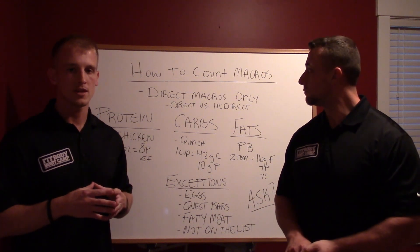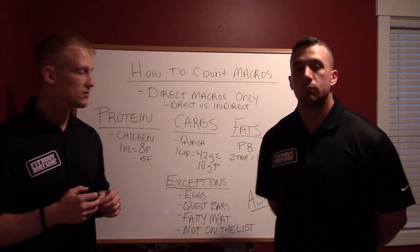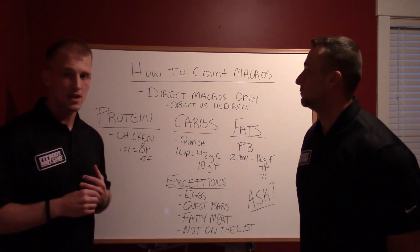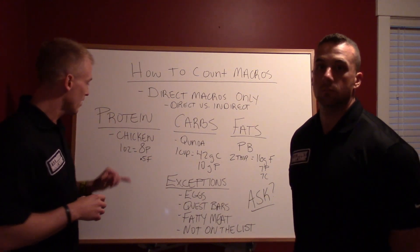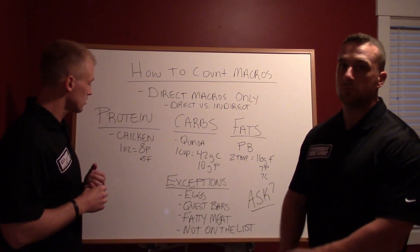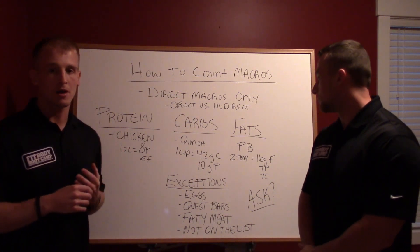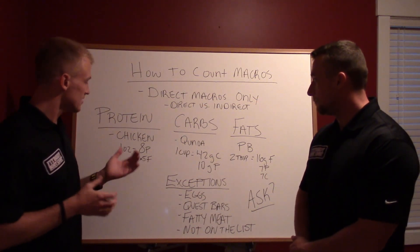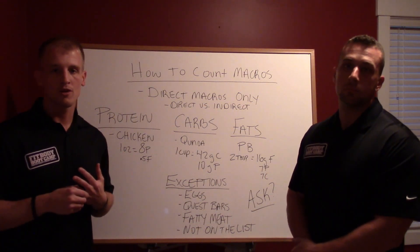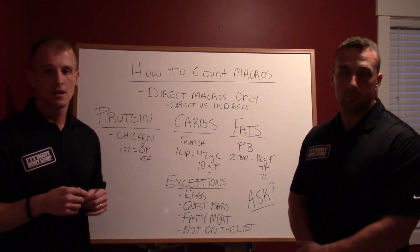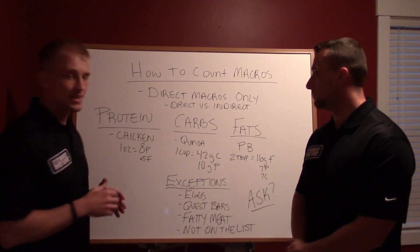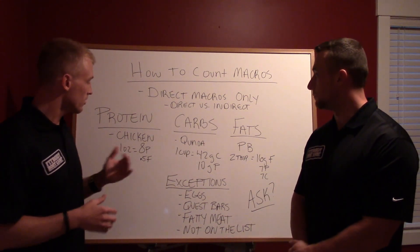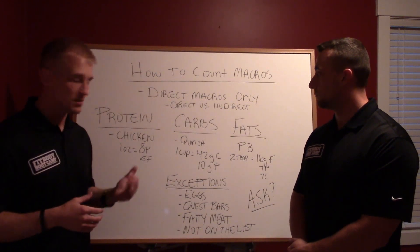We're going to give you a few examples — most people learn better with examples. Let's take protein. Chicken breast is on your list. One ounce of chicken breast cooked is 8 grams of protein. Does it have some fat in it? Yes — about 0.5 grams of fat per ounce. But you do not need to worry about counting that fat towards your macros. It's really meant to be that simple.